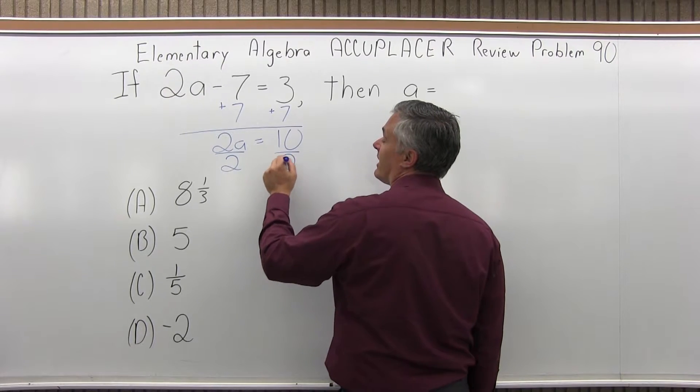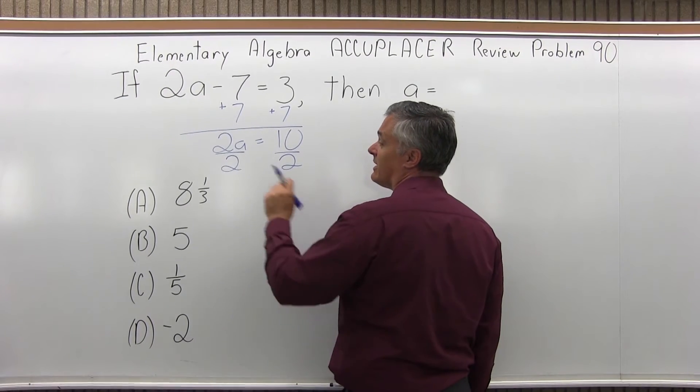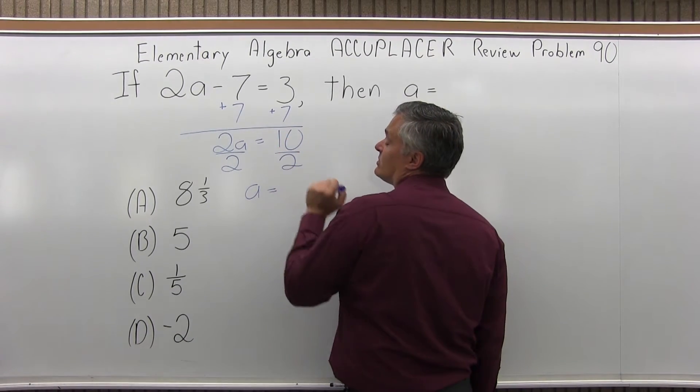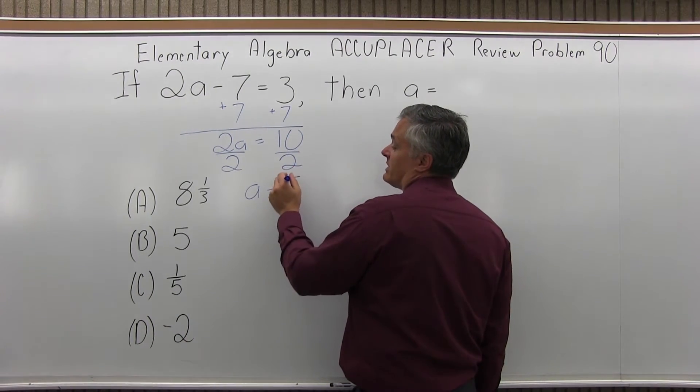So on both sides, I will divide by 2. That'll undo the 2A. So 2A over 2 is just A. 10 over 2 on the right reduces very nicely to 5.